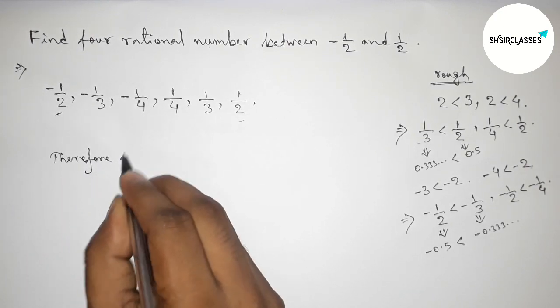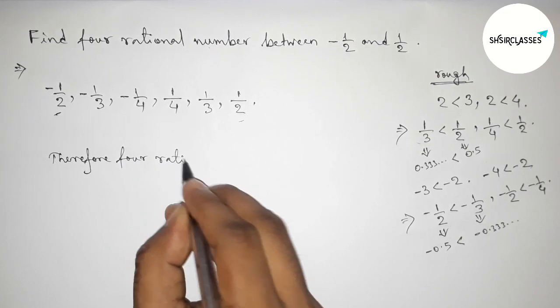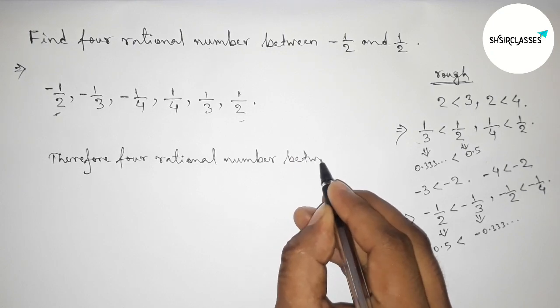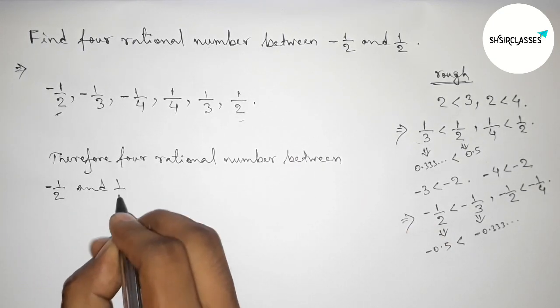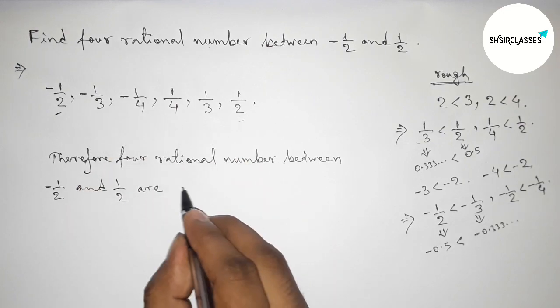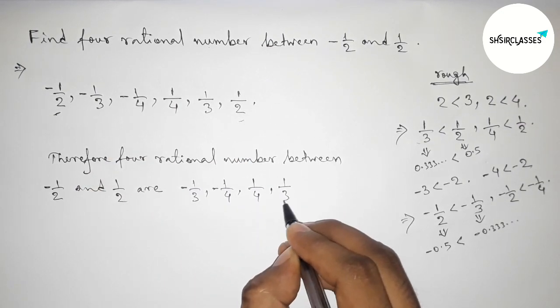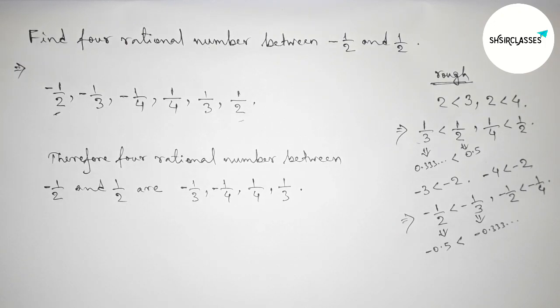Therefore, the required 4 rational numbers between minus 1 by 2 and 1 by 2 are minus 1 by 3, minus 1 by 4, 1 by 4, and 1 by 3. That's all, thanks.